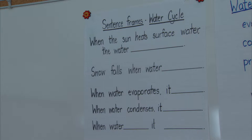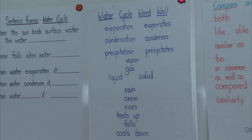The academic language of the science unit can also be made available on a separate word wall chart. In this particular example, the target vocabulary would be evaporation, evaporates, precipitation, and so on.